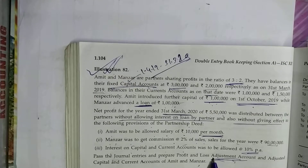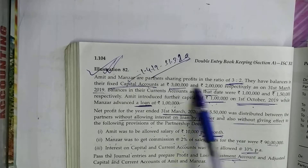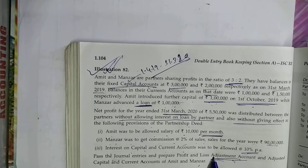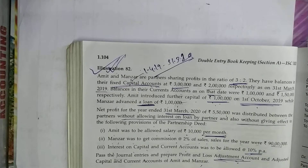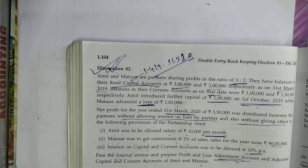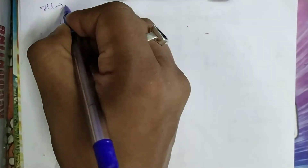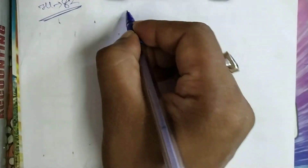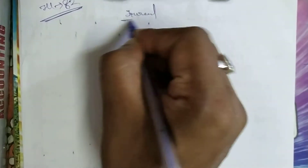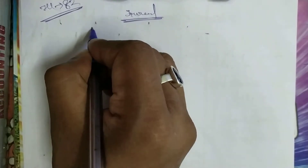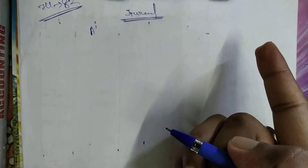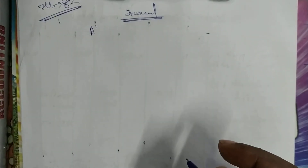But in this problem, there is no separate P&L or P&L appropriation account - there is only one account, which is the profit and loss adjustment account. So all adjustments must be done through that account. Let's proceed - first we will do the journal entries, then the P&L appropriation, and then the capital and current accounts of the partners.